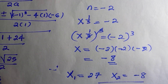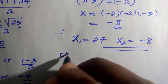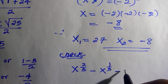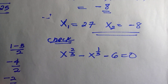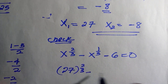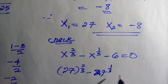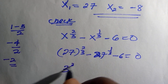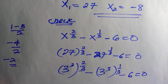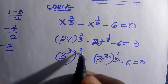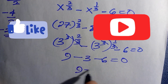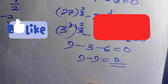So x equals twenty-seven and x equals negative eight are the solutions. Let's verify: from the original equation, x to the power of two-thirds minus x to the power of one-third minus six equals zero. At x equals twenty-seven, we have twenty-seven to the power of two-thirds minus twenty-seven to the power of one-third minus six. Since twenty-seven equals three cubed, this becomes three squared minus three minus six, which is nine minus three minus six, equaling nine minus nine, which is zero. Correct!